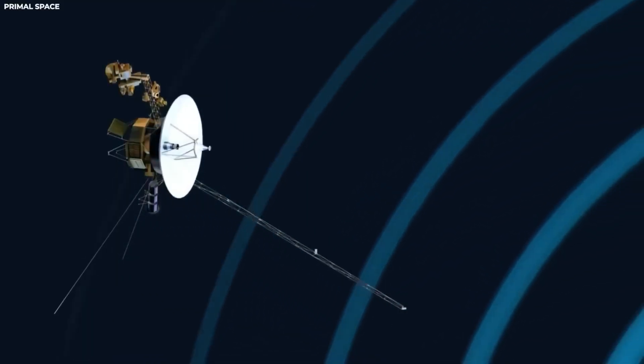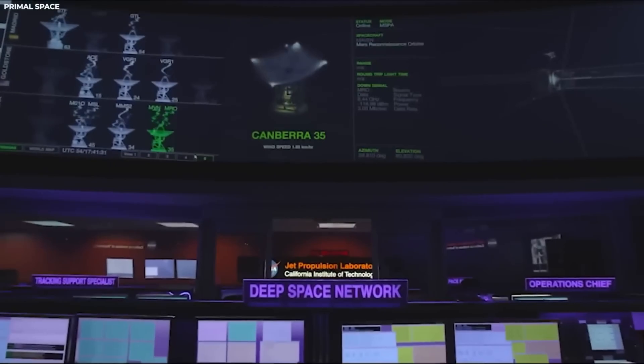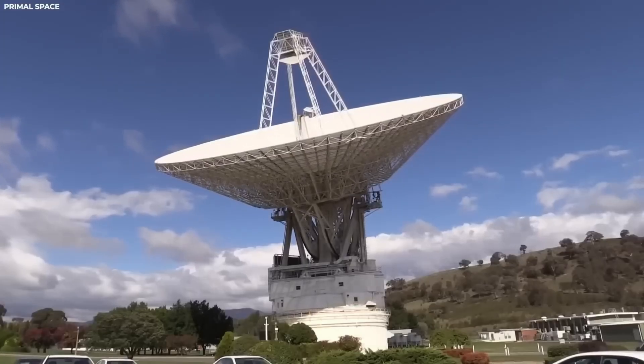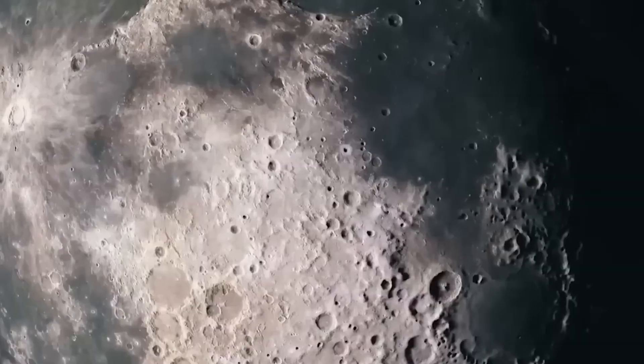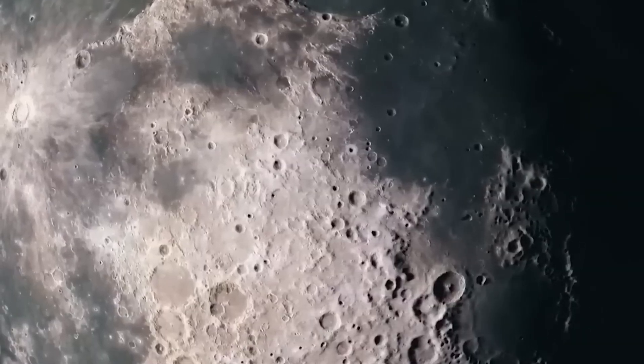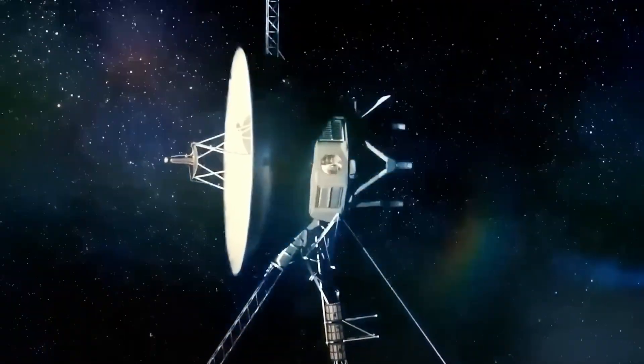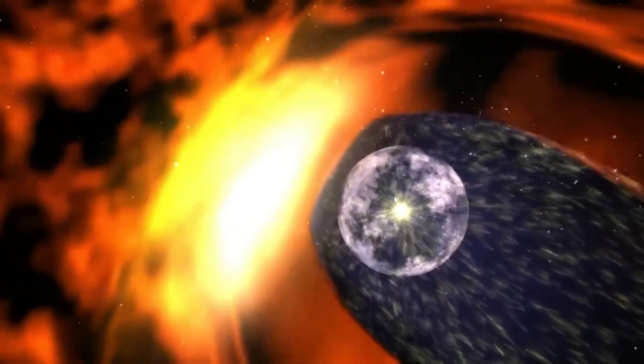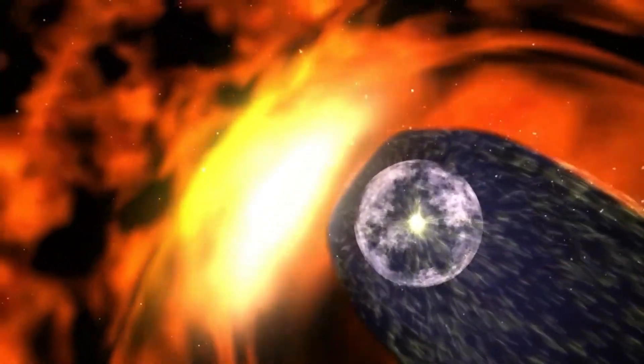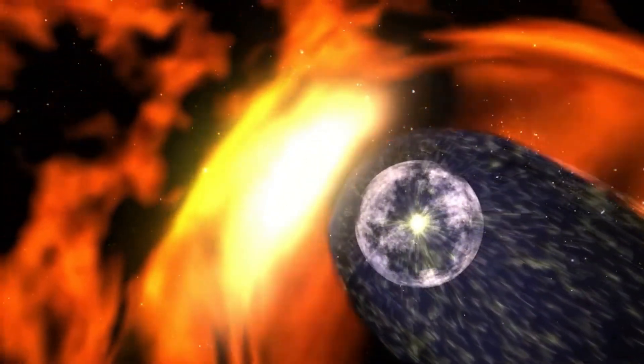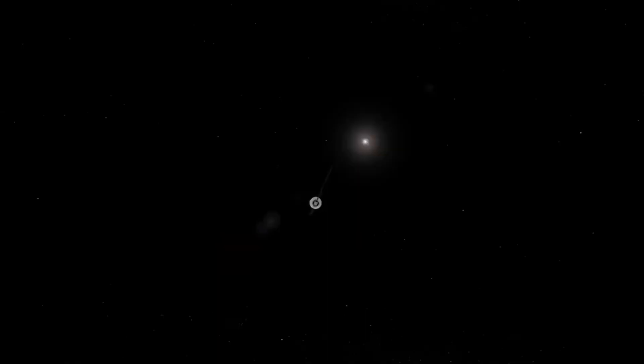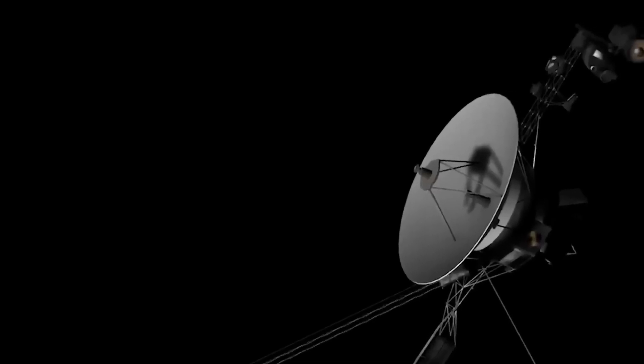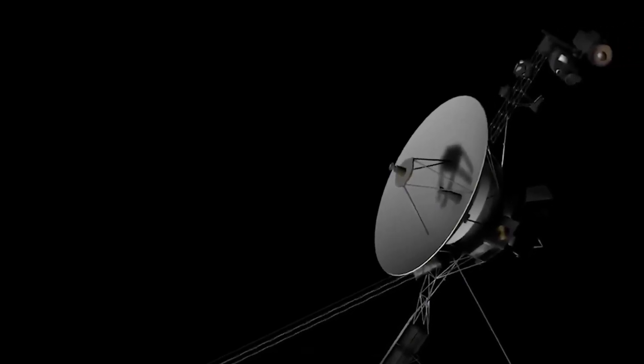Meanwhile, Voyager 2, the twin spacecraft of Voyager 1, is also operating in interstellar space, currently 12.1 billion miles, 19.5 billion kilometers from Earth, further than Neptune, the furthest planet from Earth. Both Voyager 1 and Voyager 2, launched in 1977, have gone beyond their original missions and are now collecting data from interstellar space that is helping scientists understand the heliosphere, the bubble created by the Sun that extends beyond the planets in our solar system.